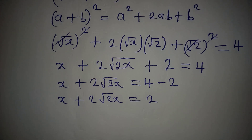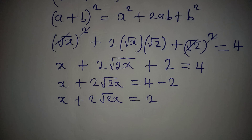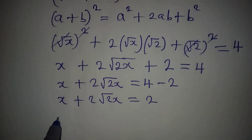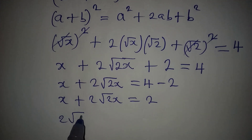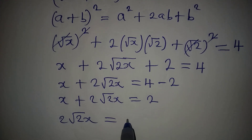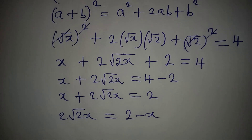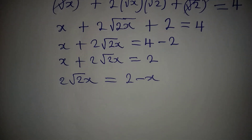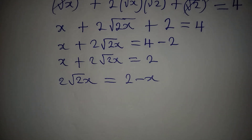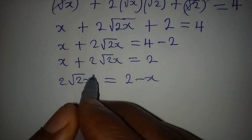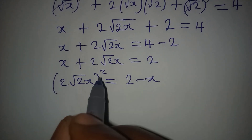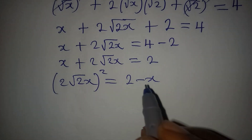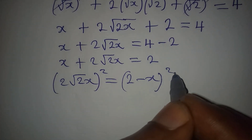Now I take x to the right, so 2√(2x) = 2 − x. There will also be need for me to square both sides again, so that the radical is eliminated.